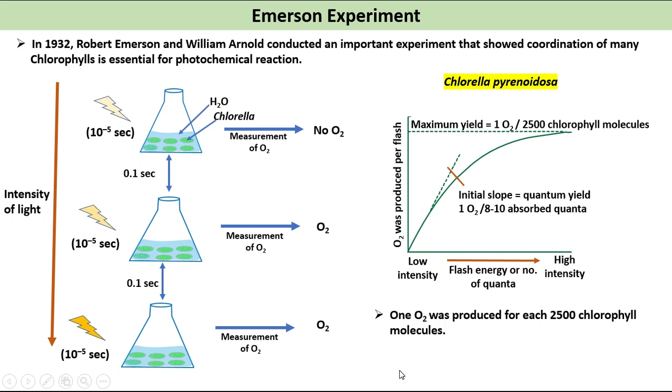Now, it is believed that photosynthetic unit consists of around 300 chlorophyll molecules.